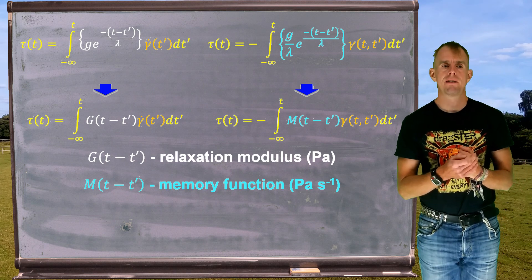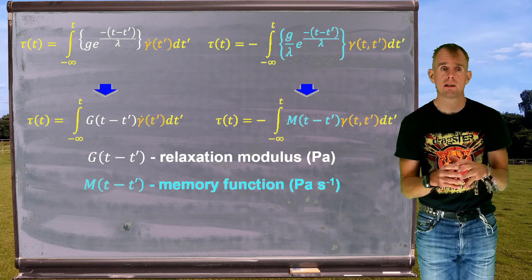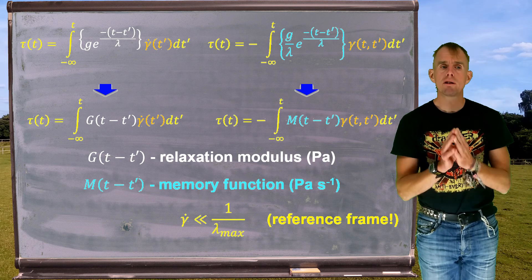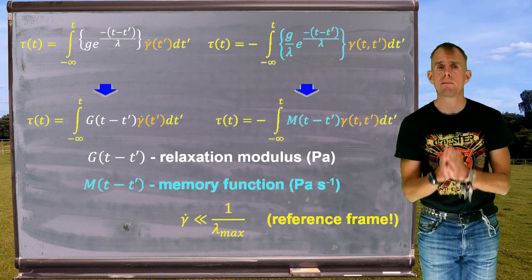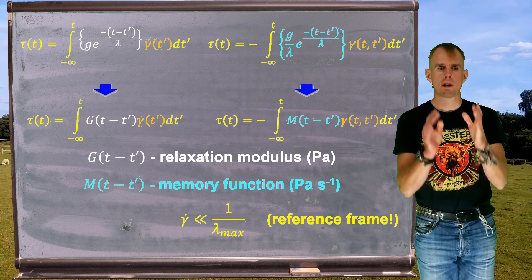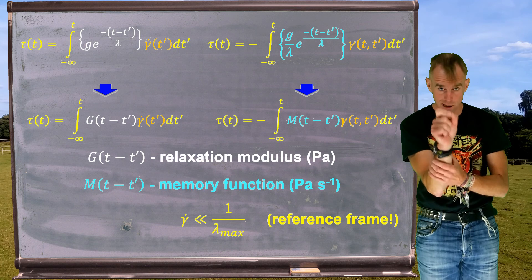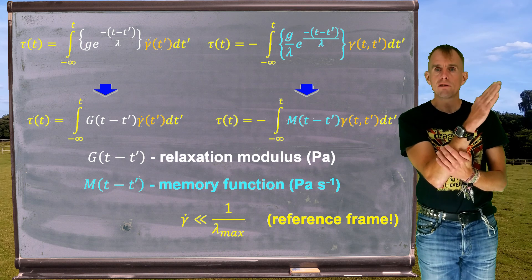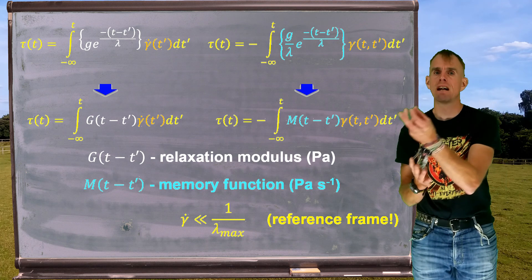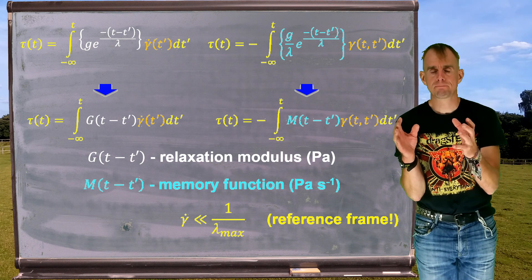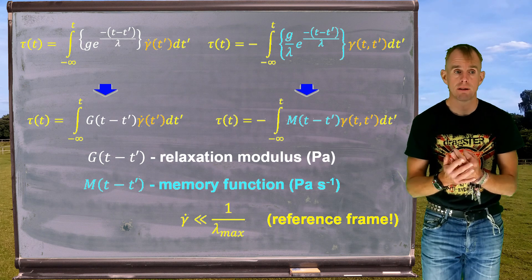Now let's think about our first limitation — one of reference frame. We're going to spend all of next lecture formally addressing this. But for now, what we're going to say is: if you want to look at a flow, make sure that your deformation rate is a lot smaller than one over your maximum relaxation time. It means that whilst we're looking at an element of fluid in our Eulerian reference frame, that flow needs to be going sufficiently slowly to ensure that all the deformation history has relaxed whilst we're observing it. So the polymer relaxes quickly, the flow moves slowly, and whilst a piece of material is in observation, we can apply our simple model to it.